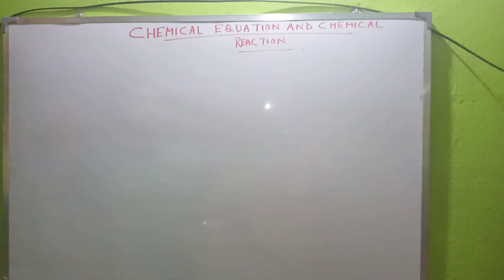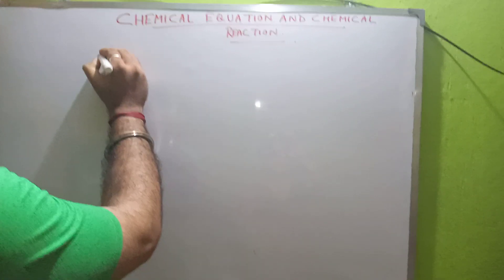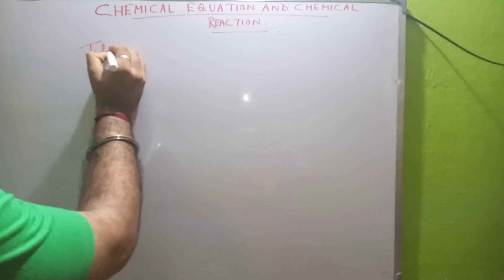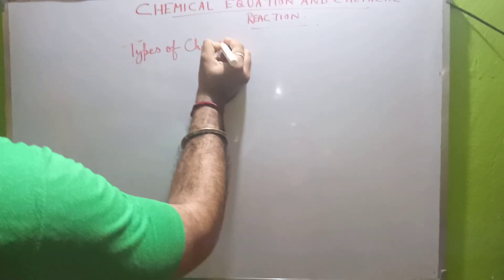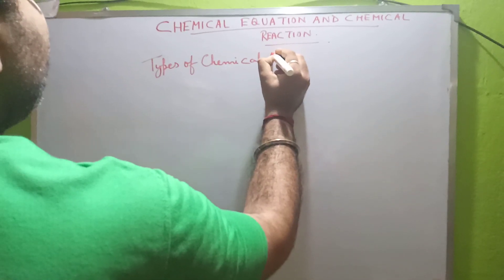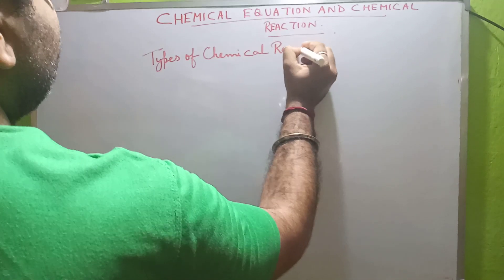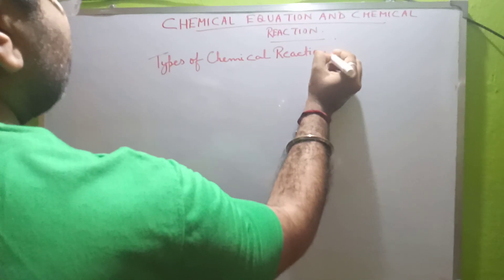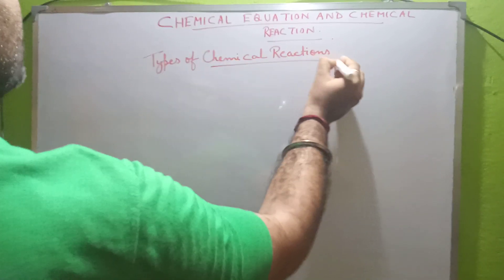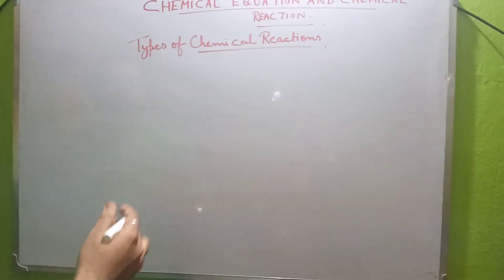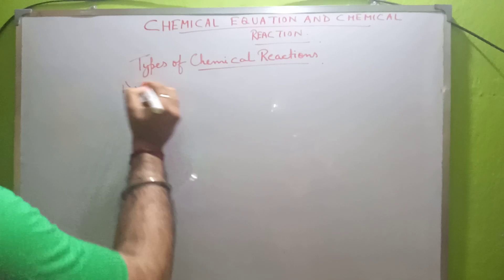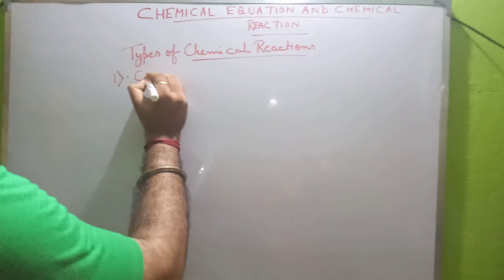Good morning. Today we are going to discuss the next part of this chapter, that is types of chemical reactions. As we talked about types of chemical reactions in my last video, you must have seen the difference between a chemical equation and a chemical reaction. So today let us see what are the types of chemical reactions.